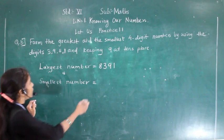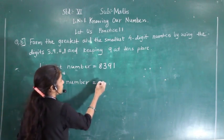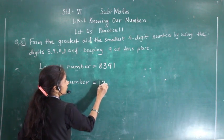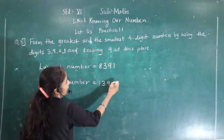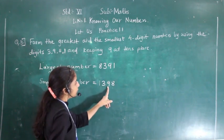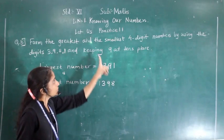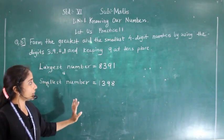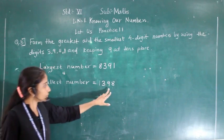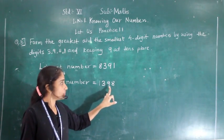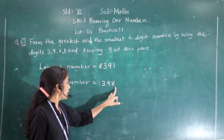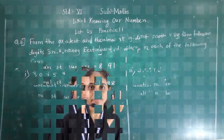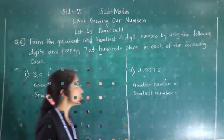For the smallest number: we write 1 first, then 3, then 9 — because the condition is that 9 is always at the tens place — then 8. So 1398 is the smallest number.